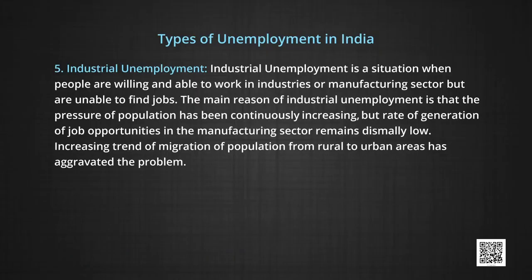Next is industrial unemployment — a situation where people willing and able to work in industries or the manufacturing sector are unable to find jobs. The main reason is that population pressure has been consistently increasing while rates of job generation are dismally low. Increasing migration from rural to urban areas has aggravated the problem. Industrial unemployment is also a spillover of rural unemployment and poor labor absorption by the manufacturing sector, largely caused by massive use of labor-saving devices — mechanization, automation, and so on.